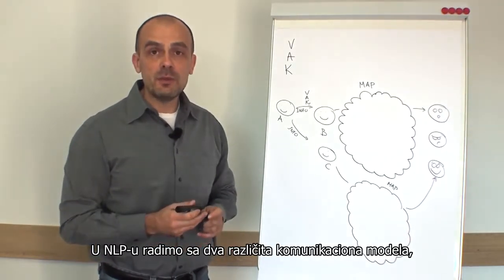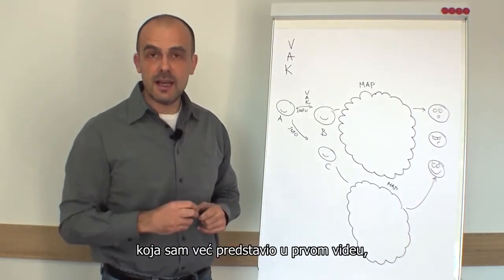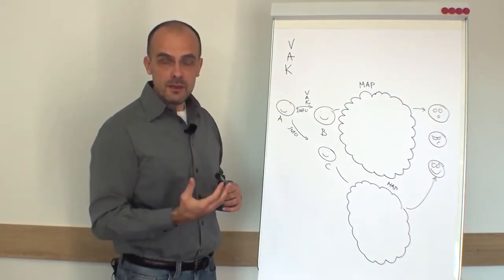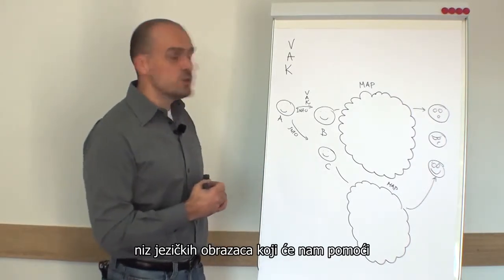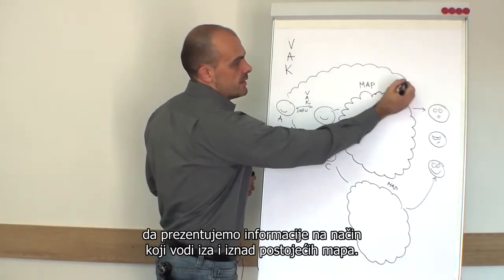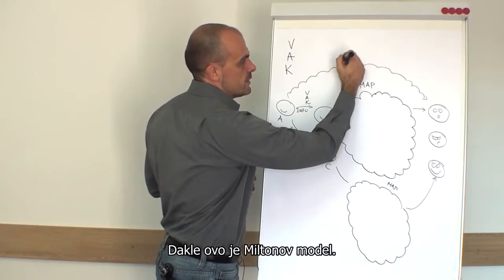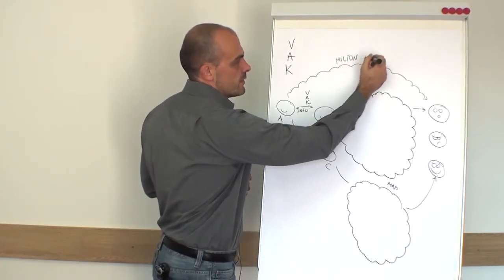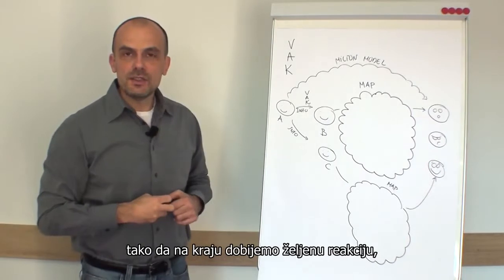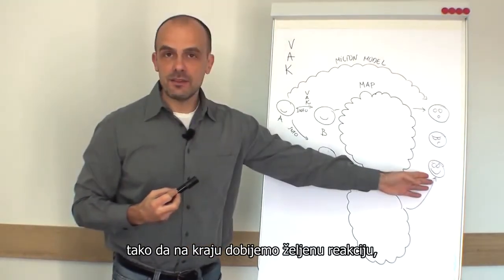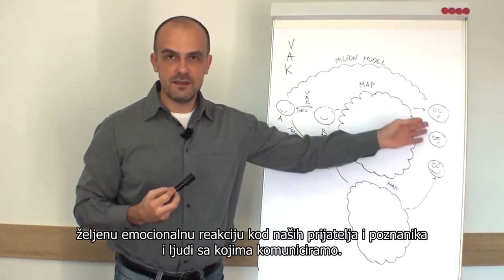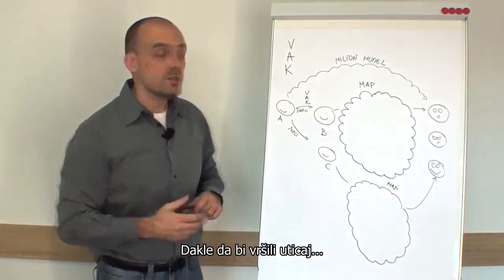In NLP we work with two different communication models, as I already presented in the first video. One is the Milton model — a set of language patterns which will help us present information in a way that goes behind and above the maps. In the Milton model, we will learn how to structure sentences so that at the end we get the desired outcome and the desired emotional reaction from the people we are talking to.